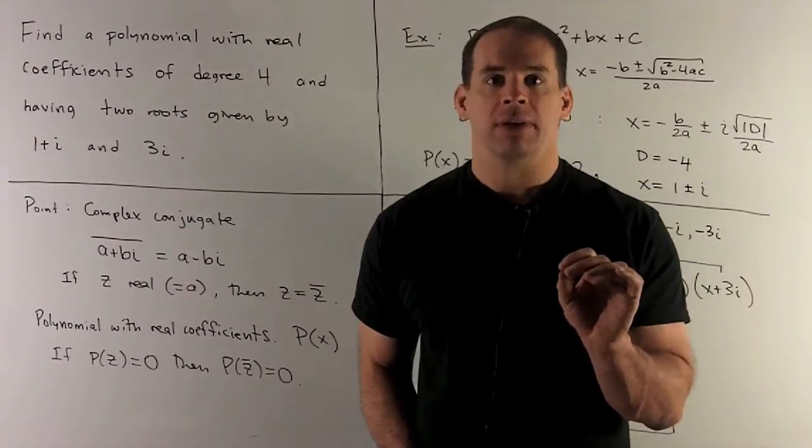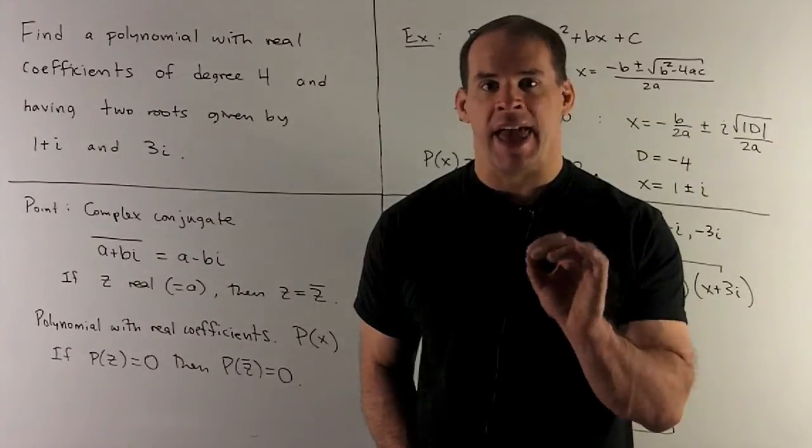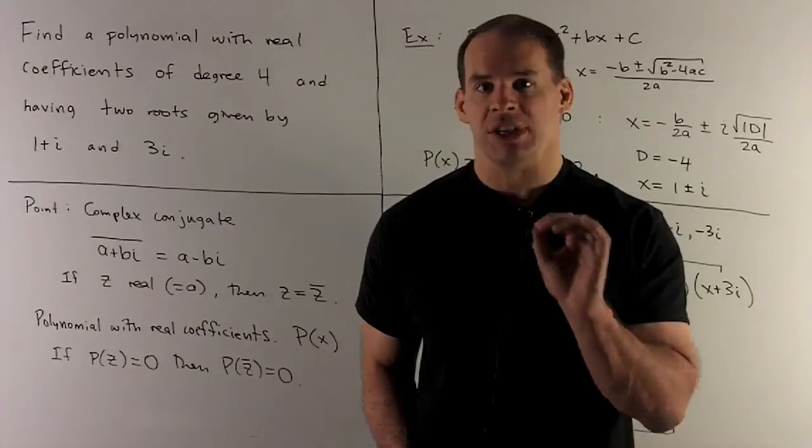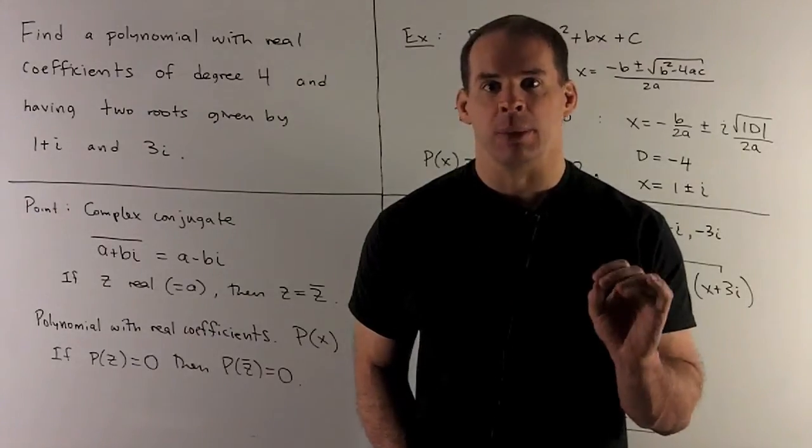Now, if z is a real number, meaning it just has an a, just the real part, then its complex conjugate is equal to itself. So z equals z bar.